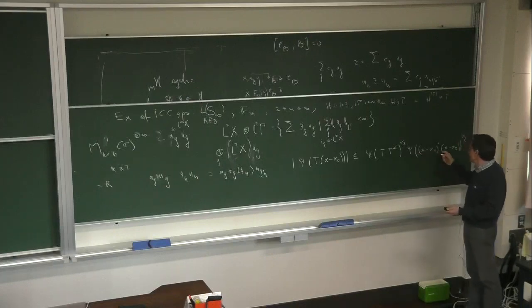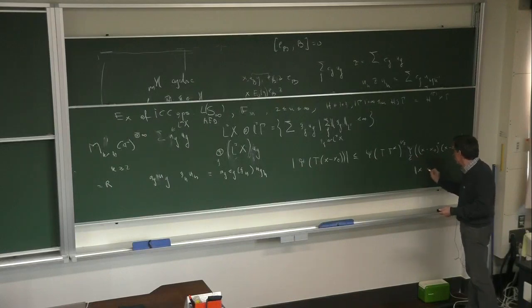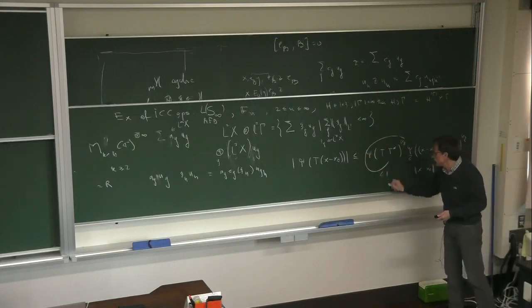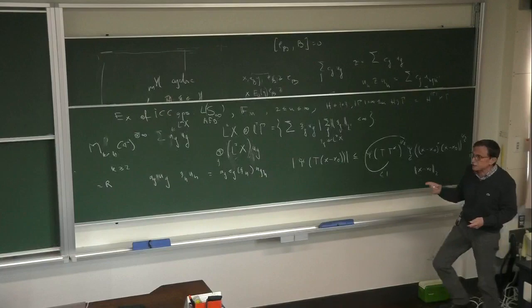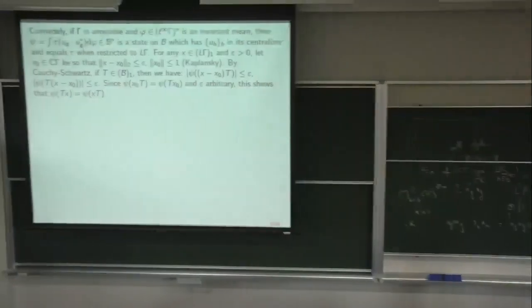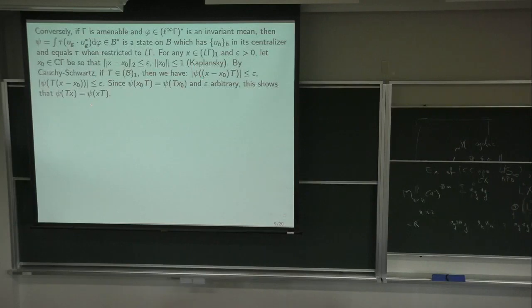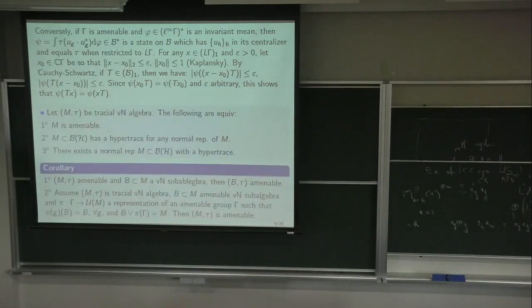So now amenable groups have the so-called Følner characterization. The amenability was introduced by von Neumann. Følner's characterization of amenability says: Γ is amenable if and only if for any finite subset F of Γ and any ε, there exists a finite nonempty set K such that for any g in F, the symmetric difference |gK △ K| / |K| < ε. If you translate K by any element of F, the part that 'goes out' is small relative to the size of K.